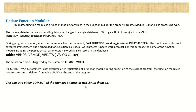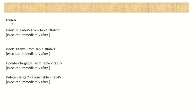To understand this with an example: in a program we are inserting a header record from a header table, and an item record into an item table. Imagine a scenario where the header record is inserted successfully but the item record fails for any reason — a validation issue or a data problem. In that case there will be an inconsistency in the database because the header record is updated but the item table has failed, making the header record meaningless.